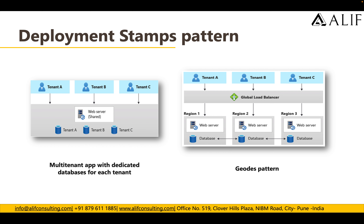The third pattern is multi-tenant app with a dedicated database for each tenant, one of the most widely used patterns in the service industry. The web service is shared — multiple tenant directories are created for each customer in the shared web server — but in the backend, each tenant has a separate dedicated database. The fourth is the geo-distributed or GDoS pattern, where each tenant has separate app services and separate databases, with optional cross-region database syncing.